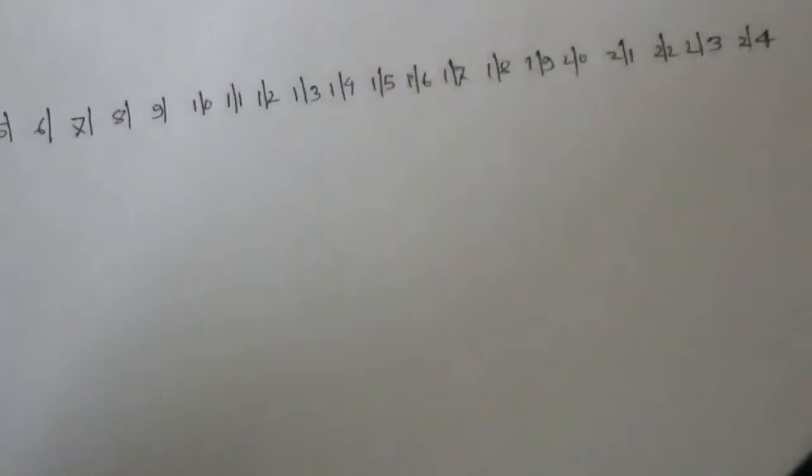Now I draw the diagram showing how to set the coils. We have 24 slots total. First I draw and number each slot: slot 1, 2, 3, 4, 5, 6, 7, 8, 9, 10, 11, 12 — continuing up to 24 slots total.